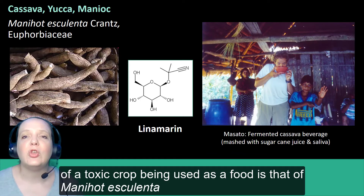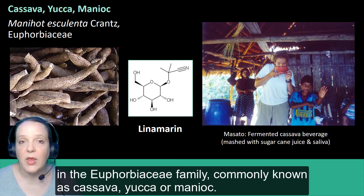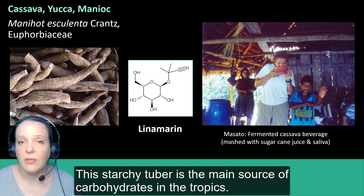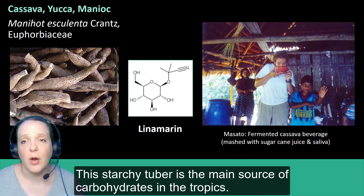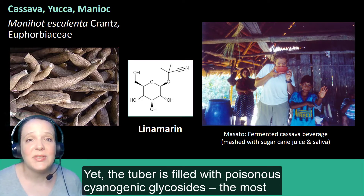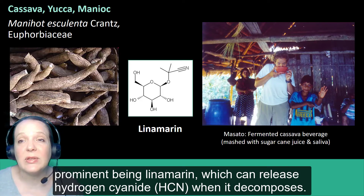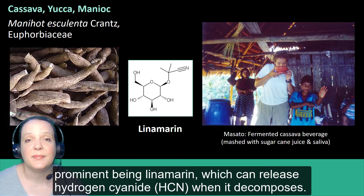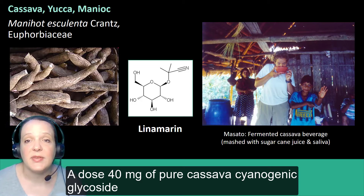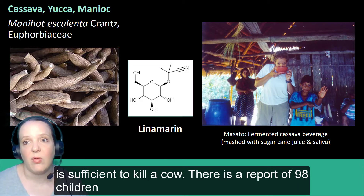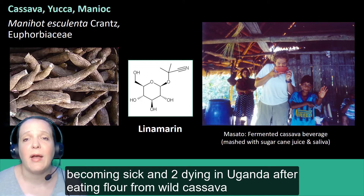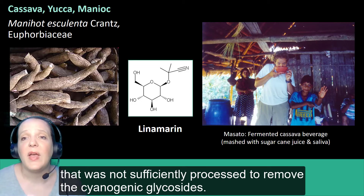One good example of a toxic crop being used as a food is Manihot esculenta in the Euphorbiaceae family, commonly known as cassava, yucca, or manioc. This starchy tuber is the main source of carbohydrates in the tropics. Yet the tuber is filled with poisonous cyanogenic glycosides, the most prominent being linamarin, which can release hydrogen cyanide when it decomposes. A dose of 40 mg of pure cassava cyanogenic glycosides is sufficient to kill a cow. There is a report of 98 children becoming sick and even two dying in Uganda after eating flour from wild cassava that was not sufficiently processed to remove those cyanogenic glycosides.